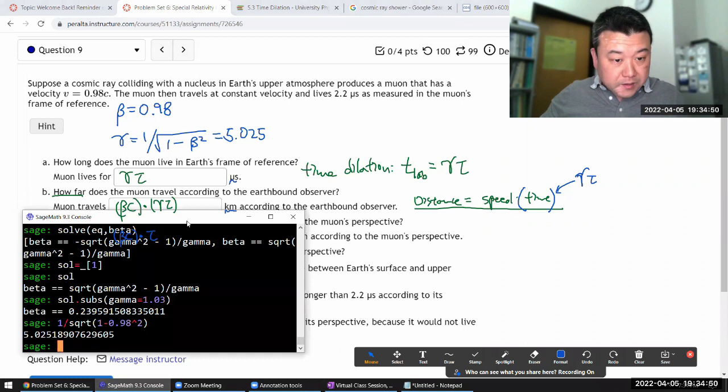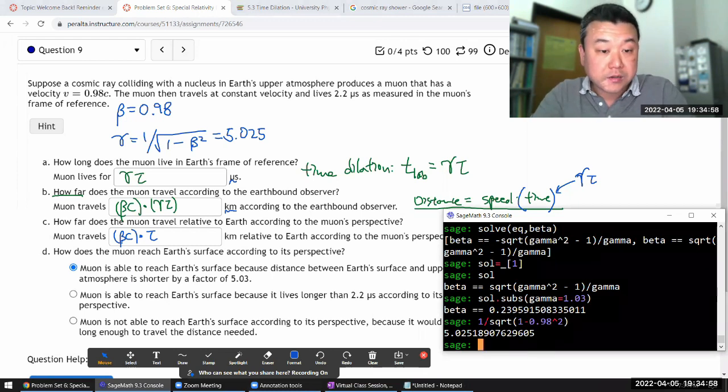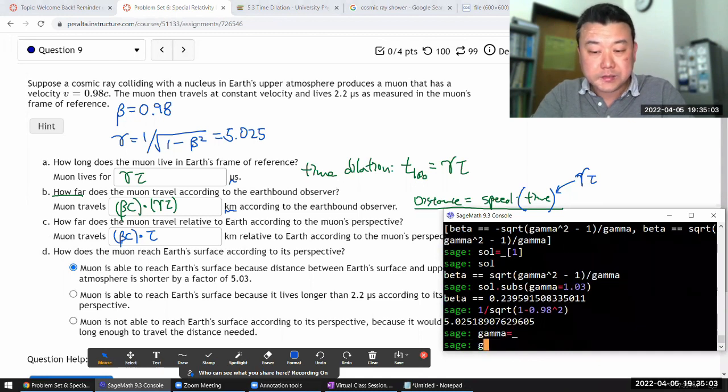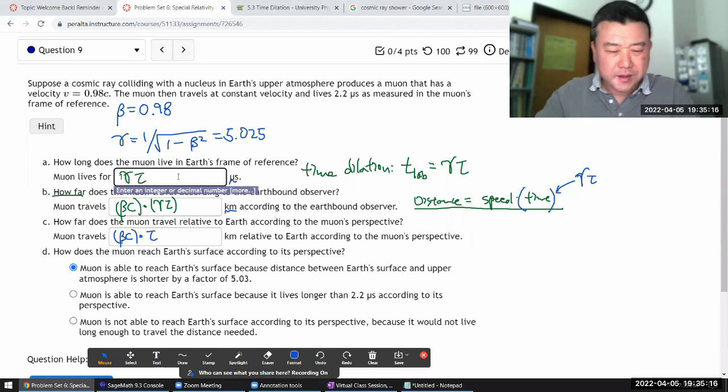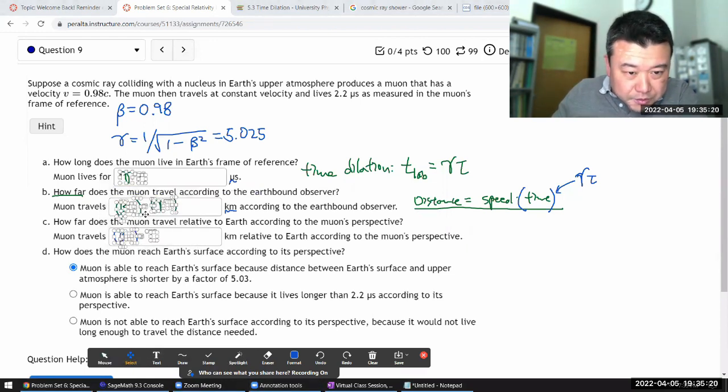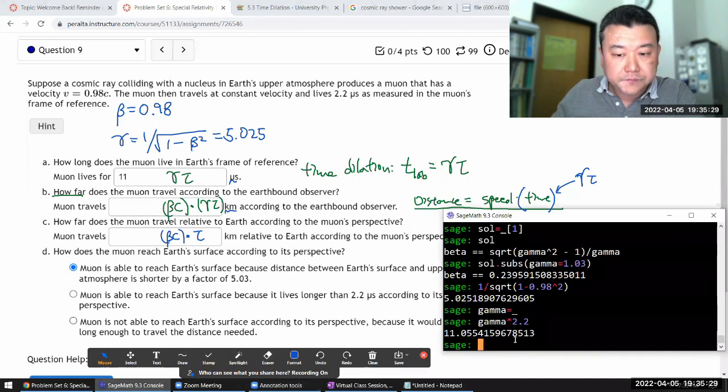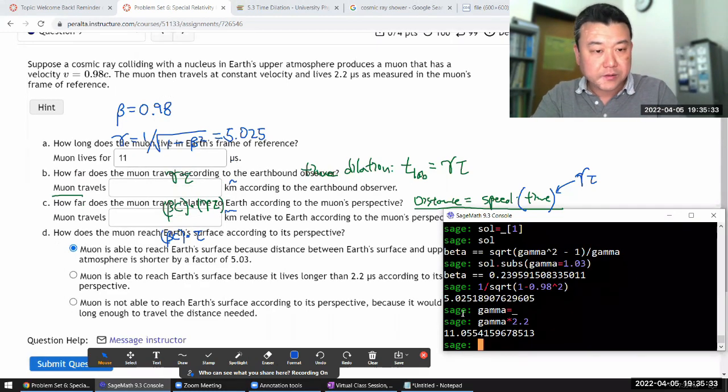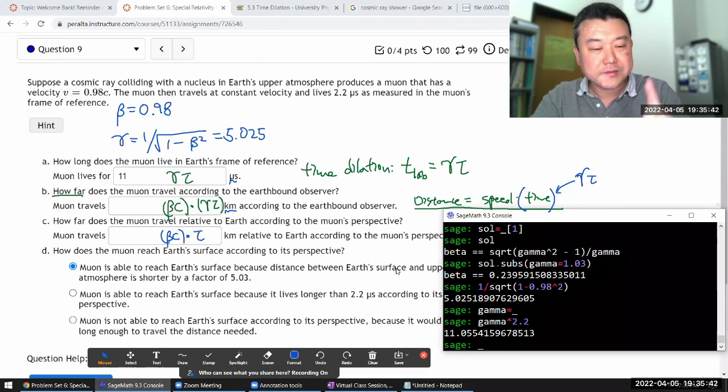So let me plug in the numbers here. I guess I can just type in the numbers. So gamma tau in microseconds, there'll be gamma times 2.2 microseconds. It's a proper lifetime. So 11.06 or I think if I say 11, it'll say it's correct. And sorry, I just realized I positioned this rule. I should have positioned it to the right. 11 microseconds in Earth's frame of reference. And in this 11 microseconds, it travels 11 microseconds times beta 0.98 times c,